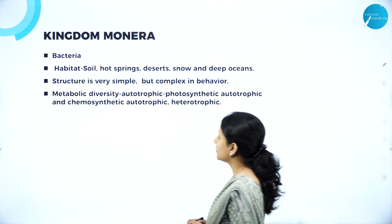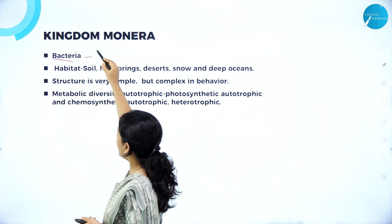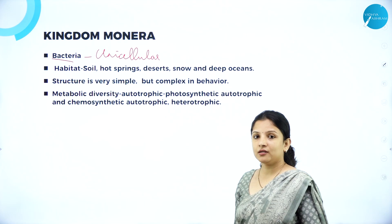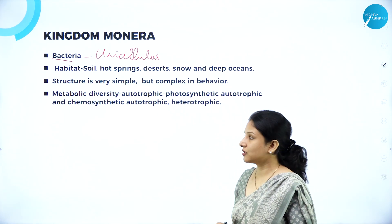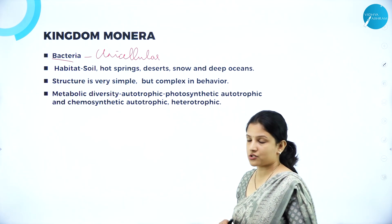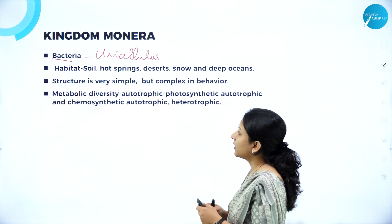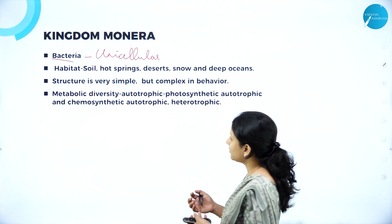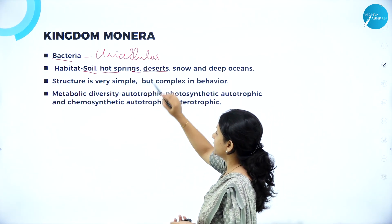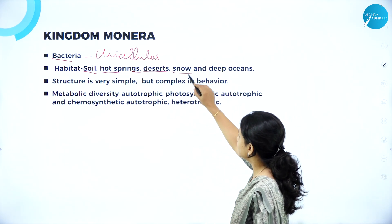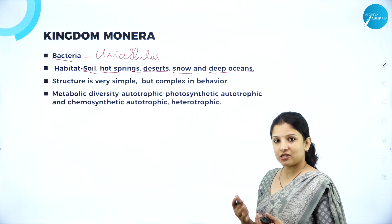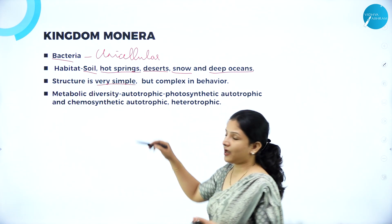Kingdom Monera — under this, the bacteria are unicellular. We have already seen in the previous session wherein I had talked about the different kingdoms in general, and we came to know that they have cellular level of organization wherein they are unicellular in nature. All bacteria come under Kingdom Monera. Talking about where they live, they can live in soil, in extreme conditions such as hot springs,